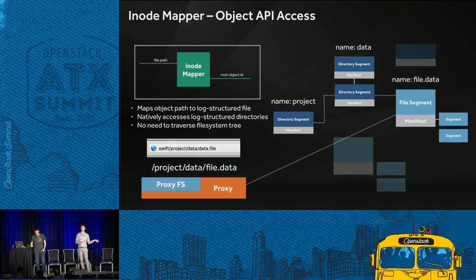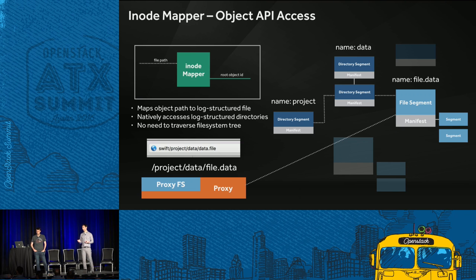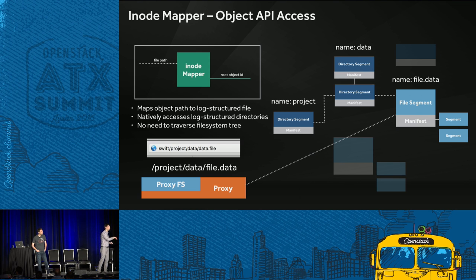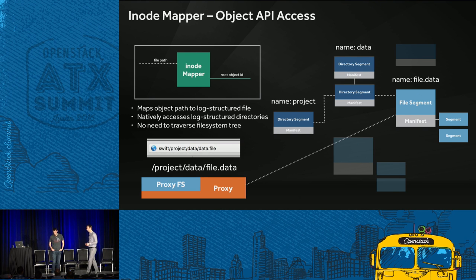With millions of objects in Swift tied together via log-structured manifests and the inode abstraction layer, we need to know how to find the right manifest to read the right segments for the data requested. That's where the inode mapper comes in — a strongly consistent key-value store used for lookups. When an object comes in, we translate it to the current location of the manifest — the last in that chain of segments — via a unique object ID. For object API access, you don't necessarily need to traverse the full file system tree to get at an individual file.